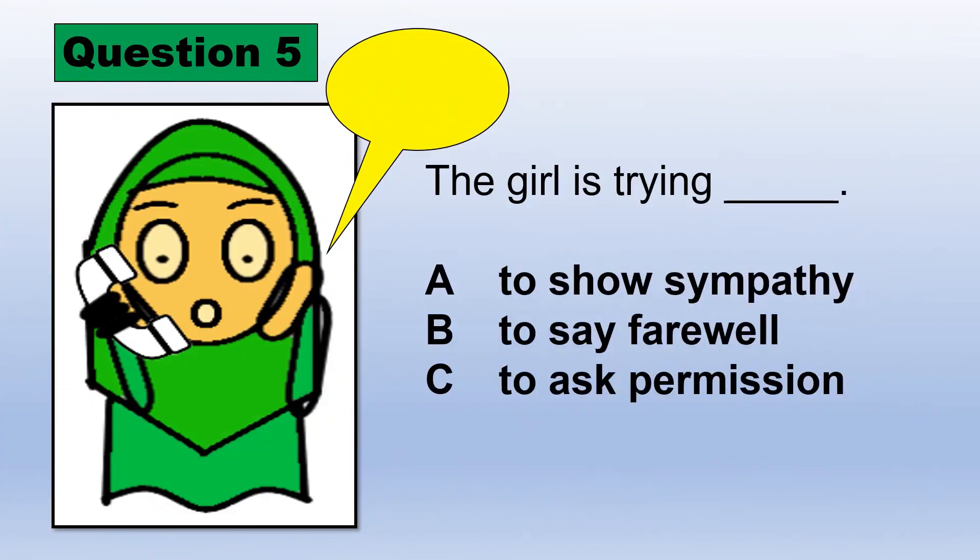Question 5. Hello. May I speak to Arissa please? The girl is trying... A, to show sympathy. B, to say farewell. C, to ask permission.